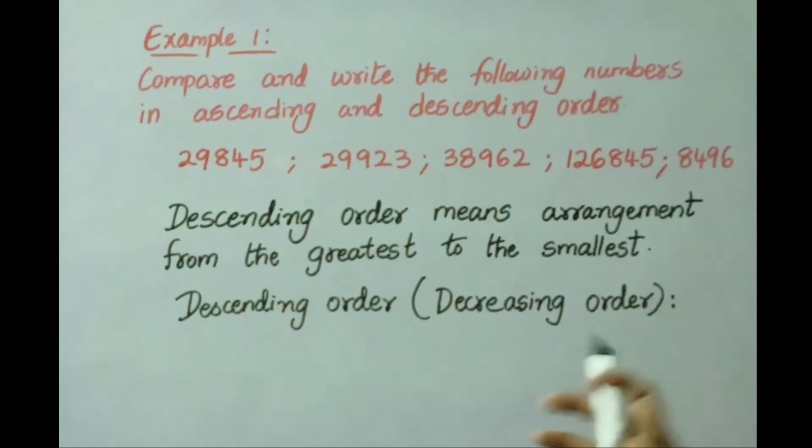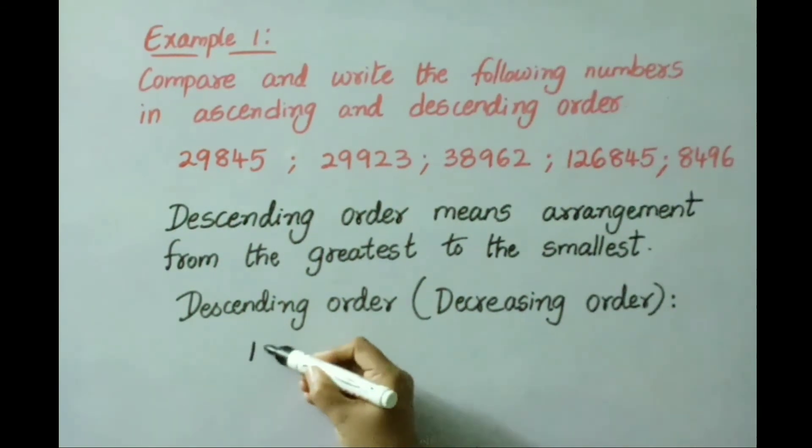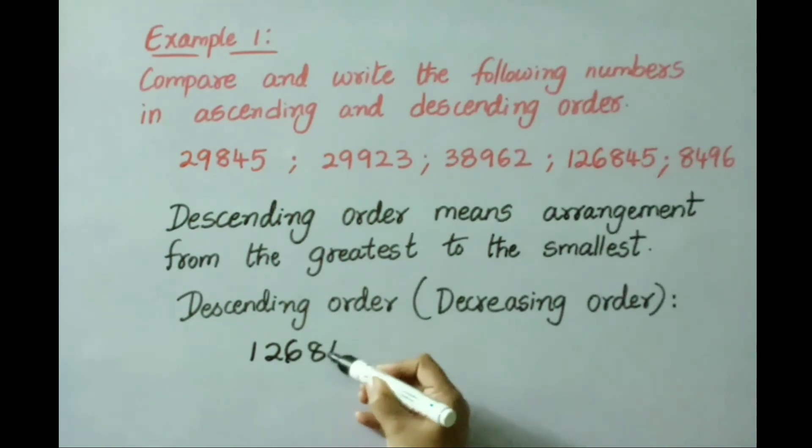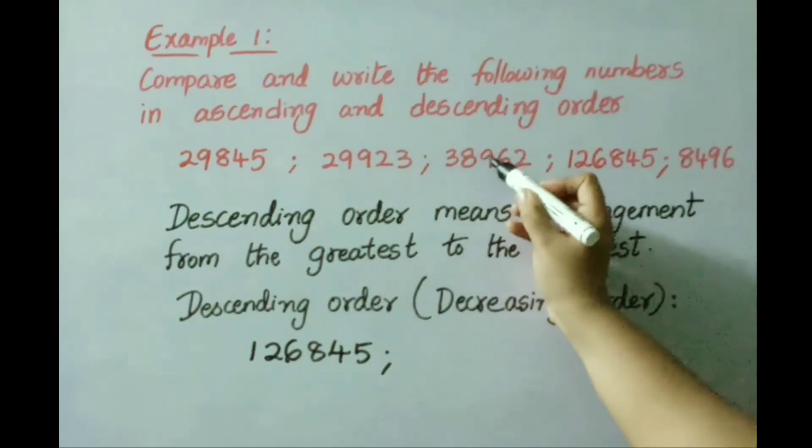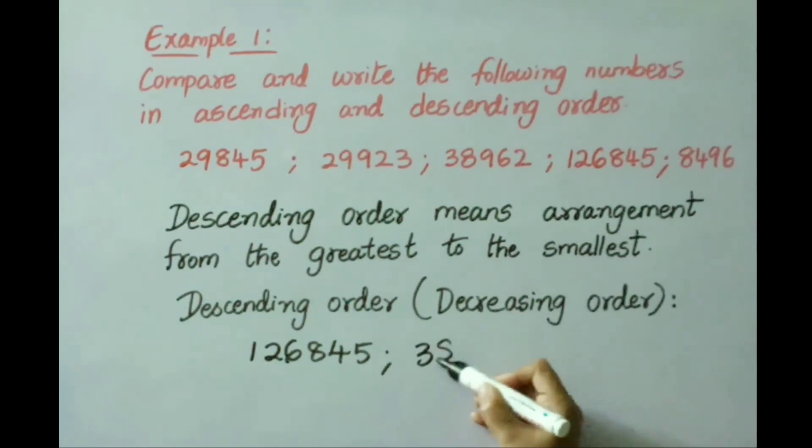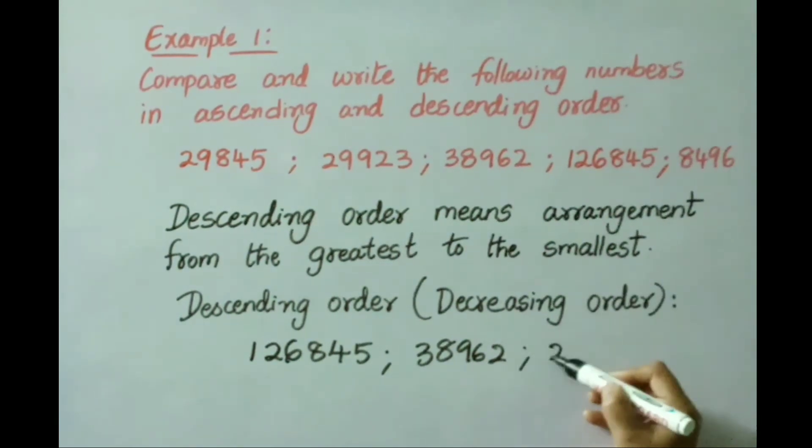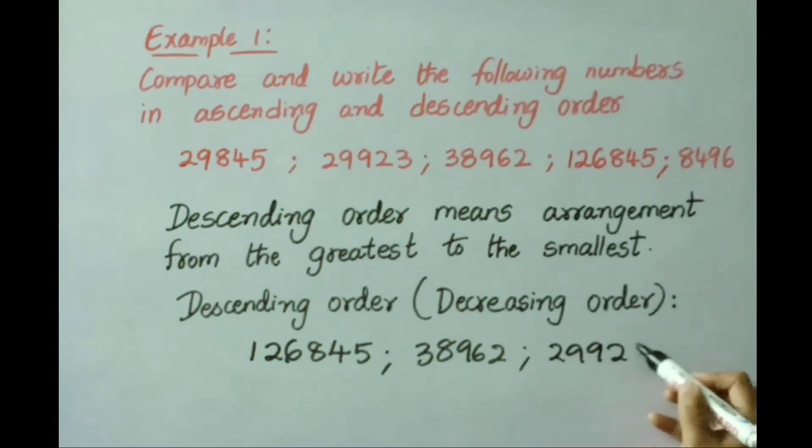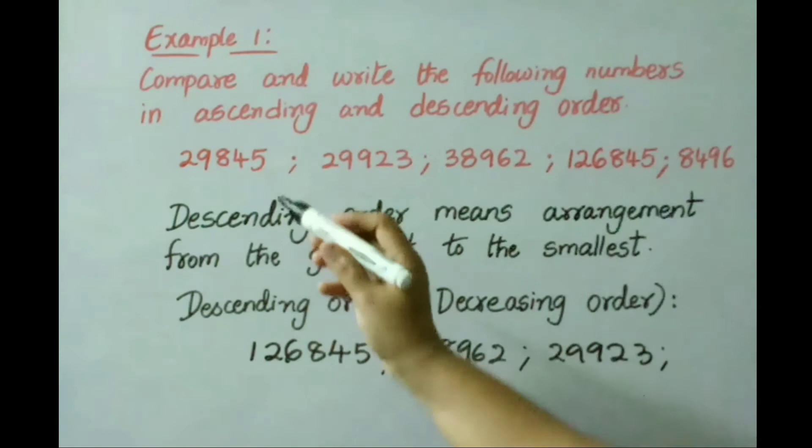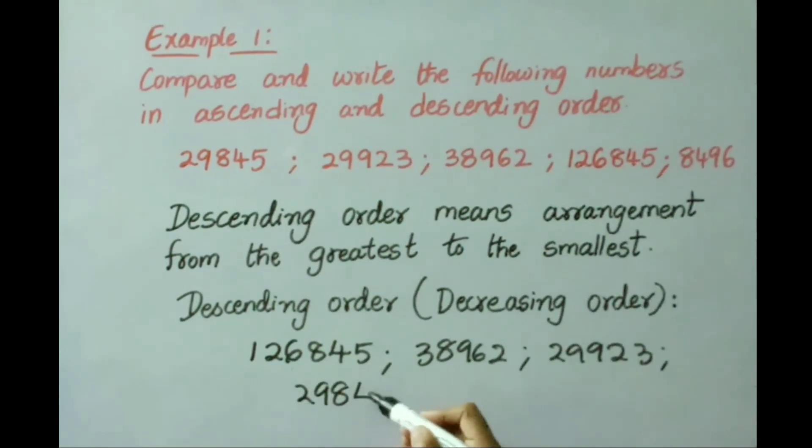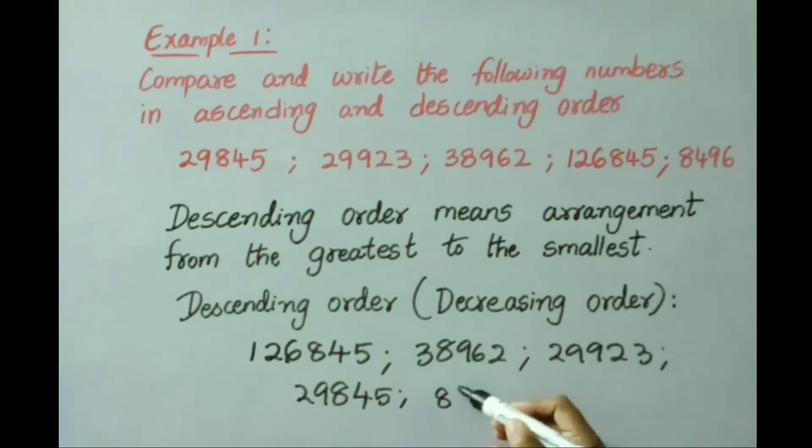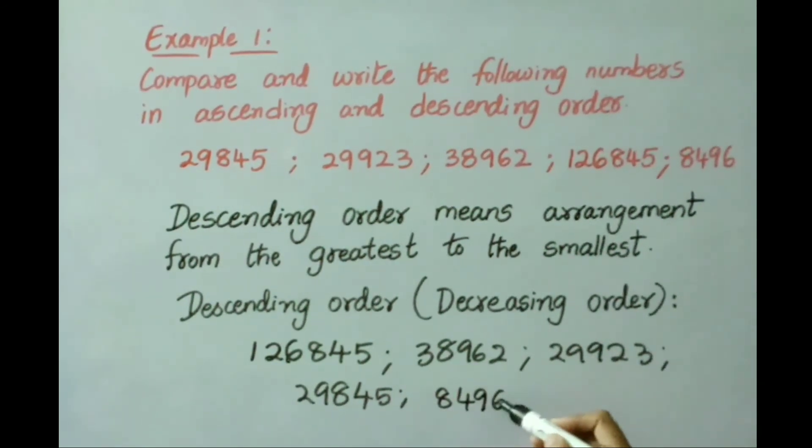See the next number, that is 38,962. Next number 29,923, and next number is 29,845. And the last, least value is 8,496. So we arrange the numbers from greatest to the smallest.